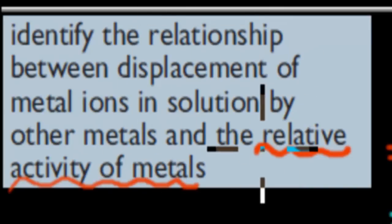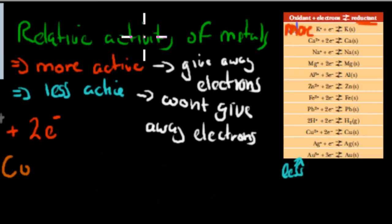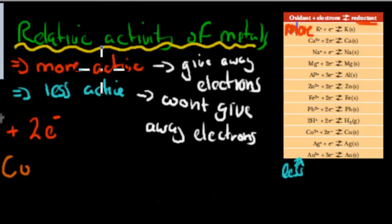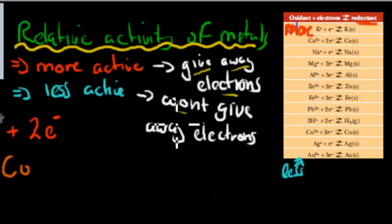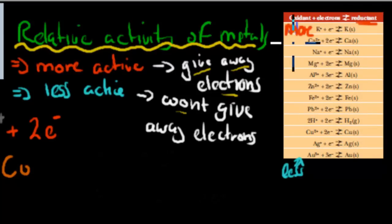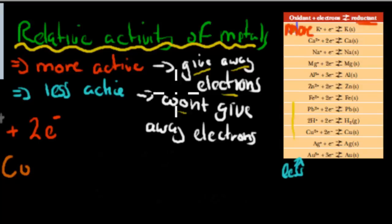Before we start, I want to make sure we go over the term 'relative activity of metals.' A more active metal means that it gives away electrons, whereas the less active metal won't give away electrons. Here we have a table — we'll cover it more in future videos — but for now, the ones on top are more active metals and the ones at the bottom are less active. So activity increases from bottom to top. Potassium at the top is the most active metal, whereas gold at the bottom is the least active.